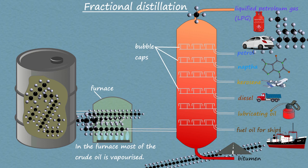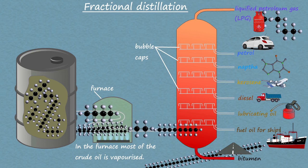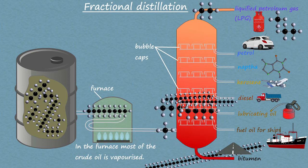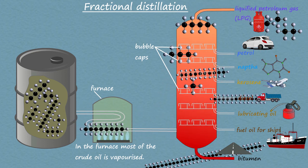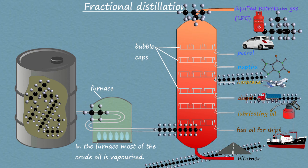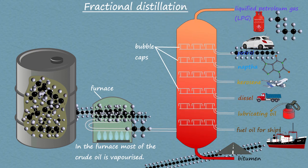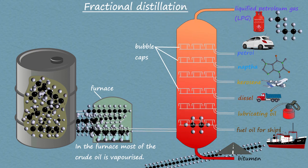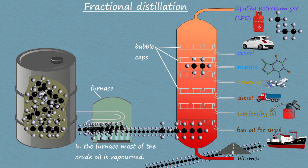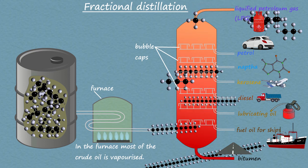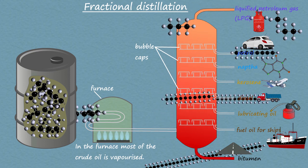We can summarise this whole process by saying that in the fractionating column, large hydrocarbon molecules are collected at the base of the column and as you rise up the column the hydrocarbon molecules in each fraction get smaller and smaller.